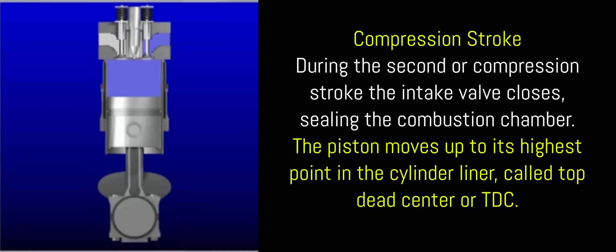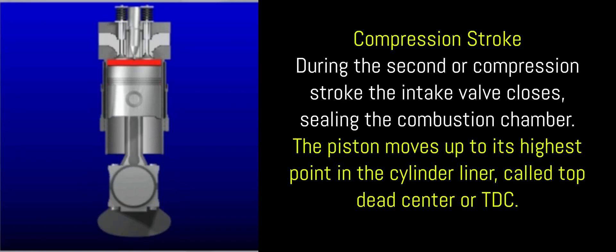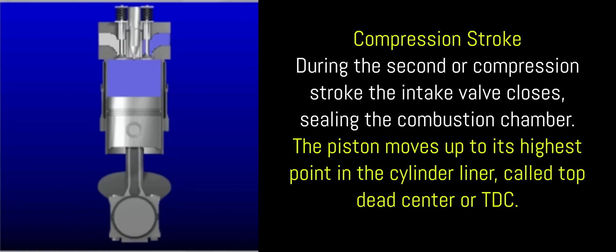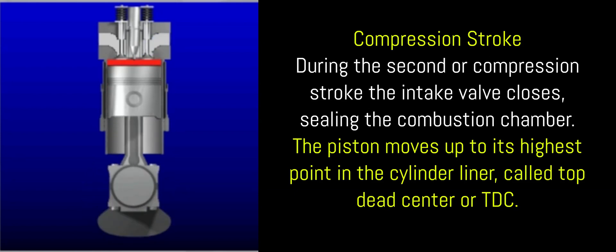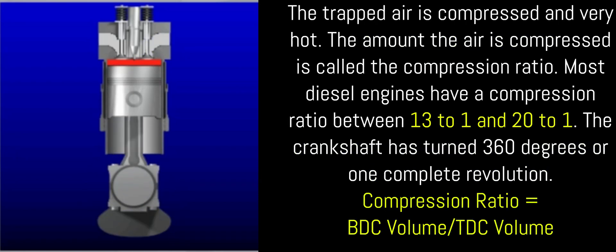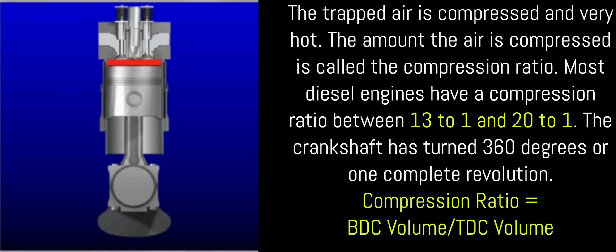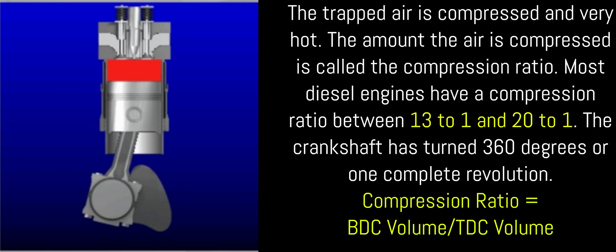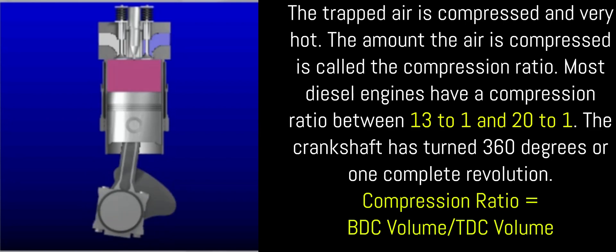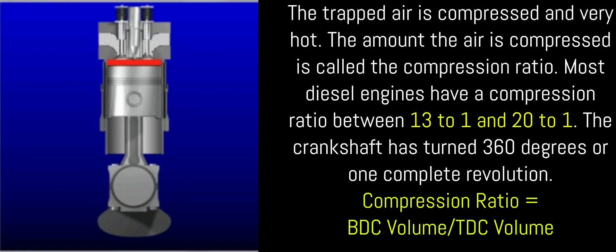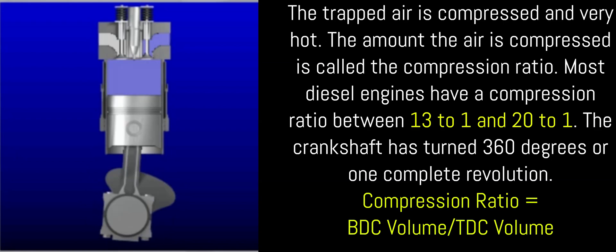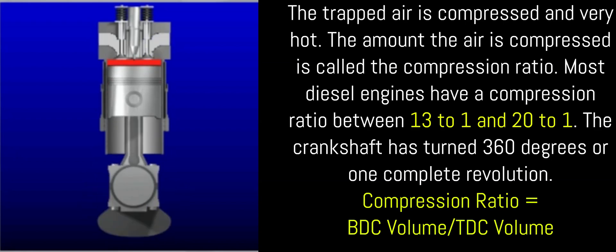Compression stroke: During the second or compression stroke, the intake valve closes, sealing the combustion chamber. The piston moves up to its highest point in the cylinder liner, called top dead center, or TDC. The trapped air is compressed and very hot. The amount the air is compressed is called the compression ratio. Most diesel engines have a compression ratio between 13 to 1 and 20 to 1. The crankshaft has turned 360 degrees or one complete revolution. Compression ratio equals BDC volume divided by TDC volume.